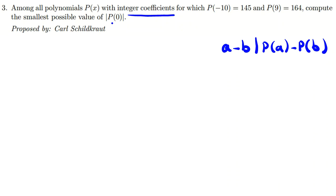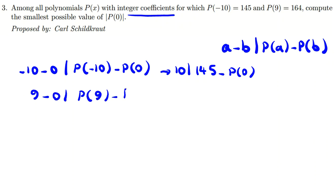I want P(0). So I say, for example, -10 - 0 divides P(-10) - P(0). So here it's -10, you can change it to 10. P(-10) is 145 minus P(0). And if you use for nine, 9 - 0 divides P(9) - P(0). So nine divides P(9) minus P(0). Let's replace P(9) with 164.